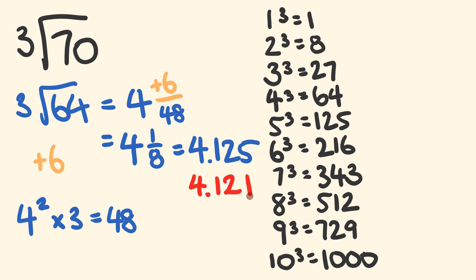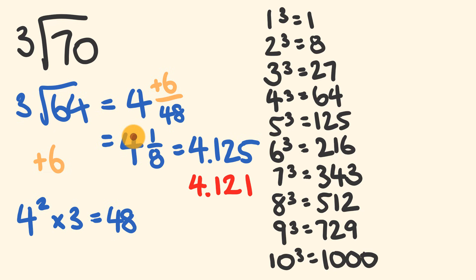Let's go through those three steps again. First, find the perfect cube closest to your number. Then get the difference between those two numbers. Finally, square the whole-number cube root and multiply by three to get the denominator of your fractional part.